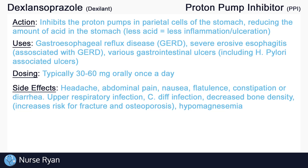Lower bone density increases the risk for fracture and osteoporosis. Hypomagnesemia is also a potential side effect of PPIs. Keep in mind that most of these side effects are more likely to occur with long-term use of PPIs and are not typically common with regular short-term use.